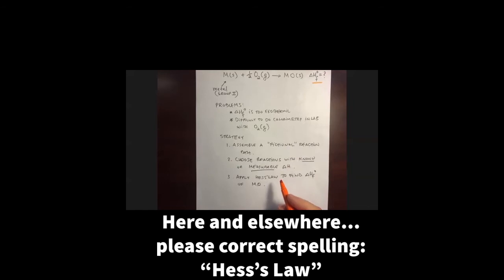So what we do in these cases is we're going to assemble a fictional reaction path. We're going to choose a set of reactions for which we either know or can measure the delta H, and arrange them so that when we add them up the result is the reaction we're looking for. This is Hess's Law, which basically says that the enthalpy of a reaction is the same regardless of how many steps it is done in — the enthalpy is not dependent on the path or mechanism, it just depends on the initial and final states.